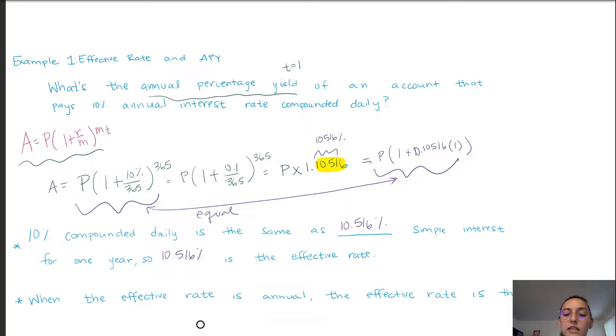And as I stated earlier, when the effective rate is annual, so for just one year, this is also the APY. Thus, we have found the APY for this scenario.